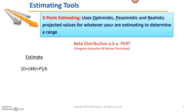The first step is to come up with a three-point weighted average, which is going to be called my estimate. To do that, I take the optimistic plus four times the realistic plus the pessimistic, and divide the whole thing by six. Why divide by six? Because you actually have six numbers on the numerator: one optimistic, four realistics, and one pessimistic. This gives me an average, but it's weighted — it's leaning towards the realistic estimate.